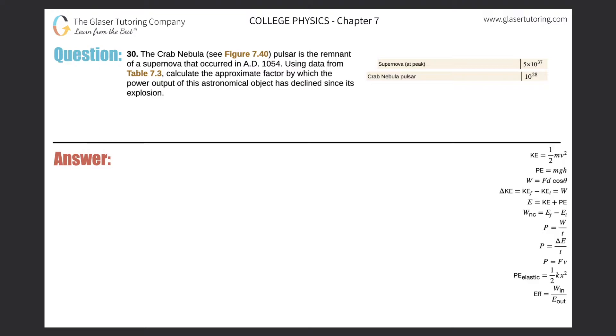Number 30. The Crab Nebula Pulsar is the remnant of a supernova that occurred in AD 1054. Using data from table 7.3, calculate the approximate factor by which the power output of this astronomical object has declined since its explosion.